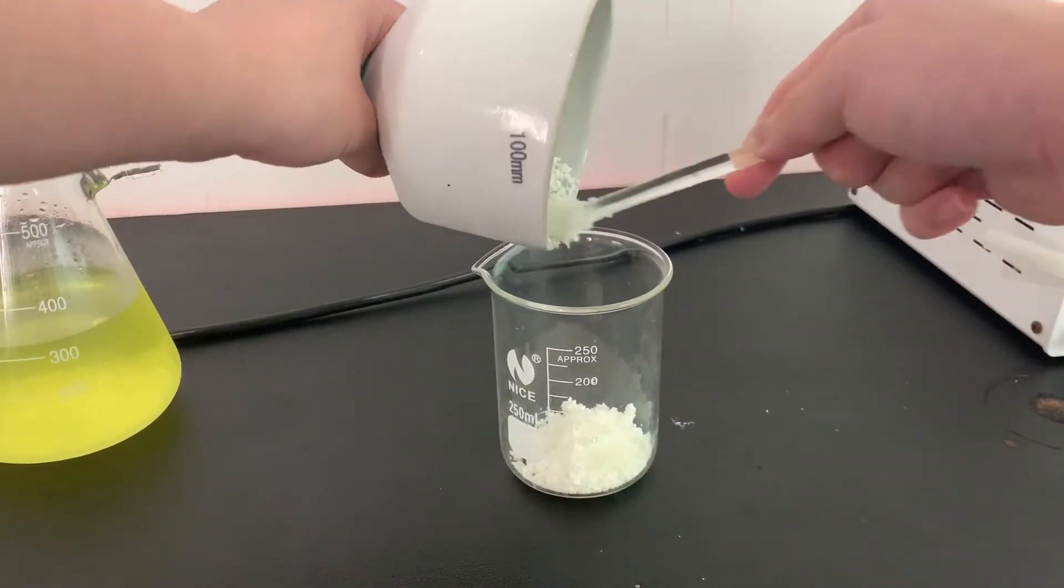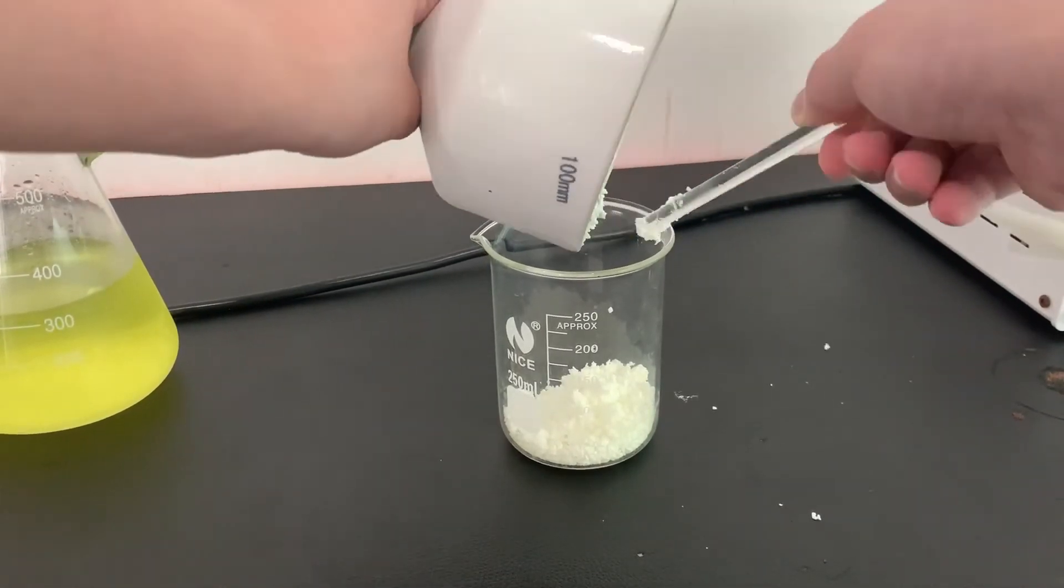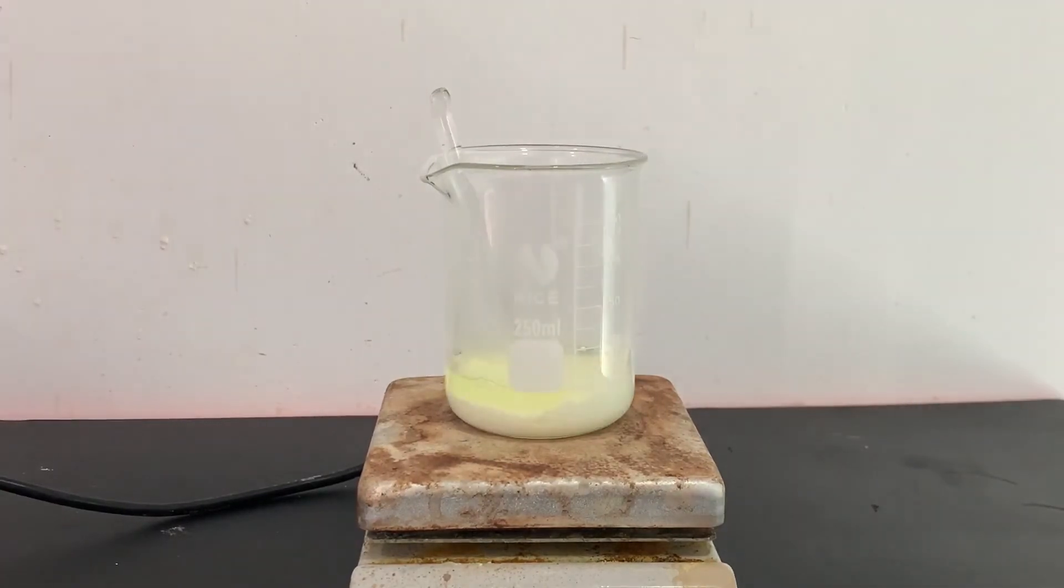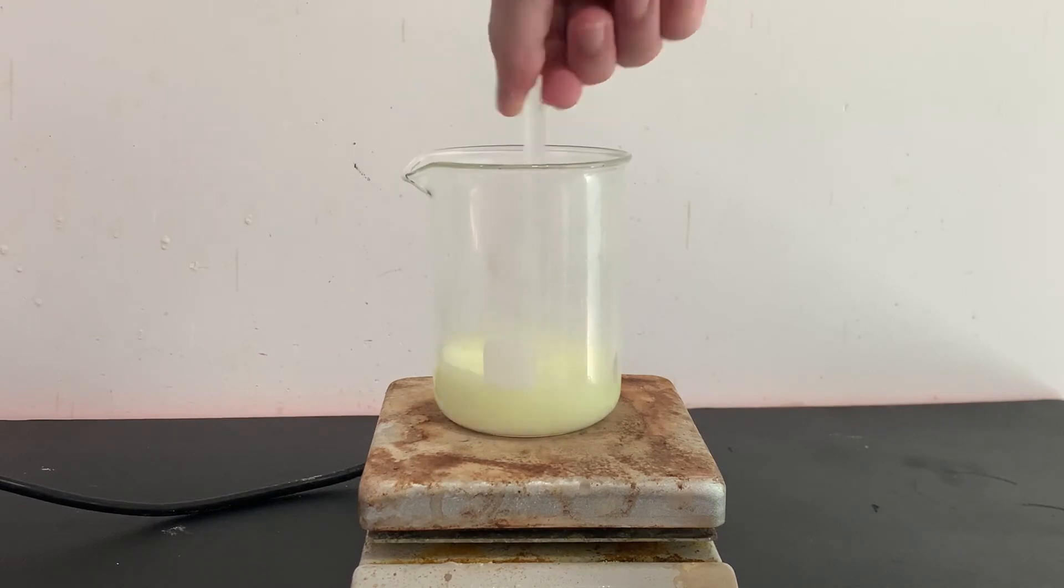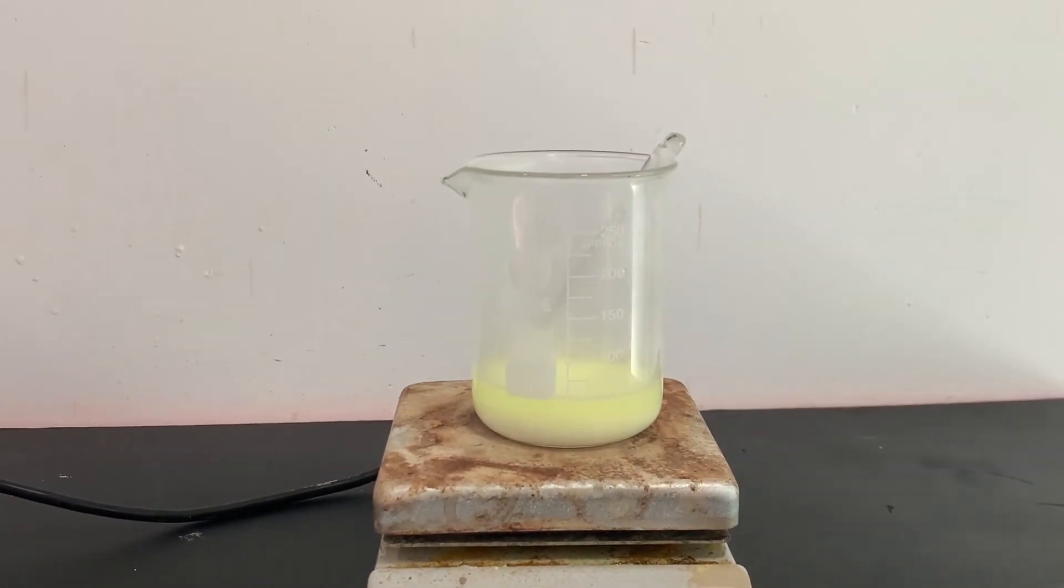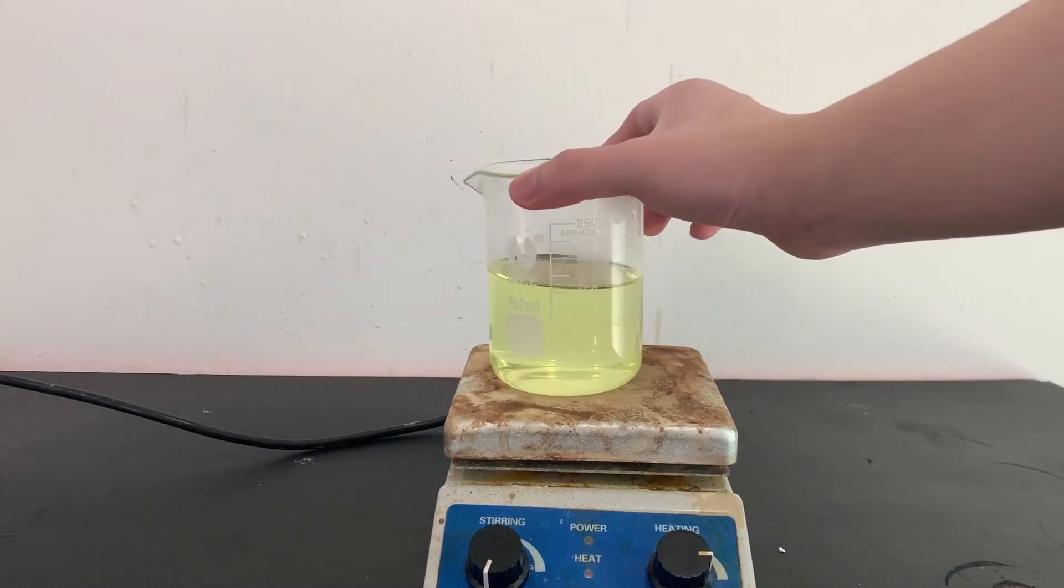The crude product is then transferred to a beaker to perform a recrystallization. Boiling water was then added to the crude 3-nitrophthalic acid until everything dissolves. Once everything dissolves, I'll cool the solution in the fridge overnight.